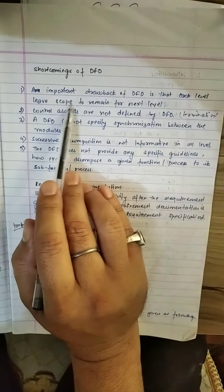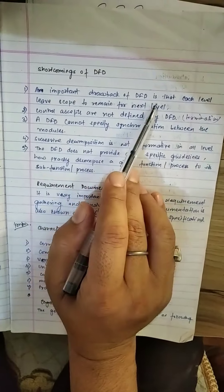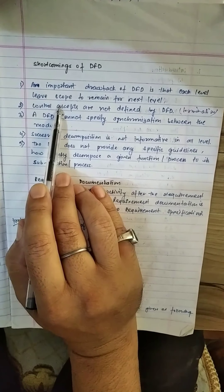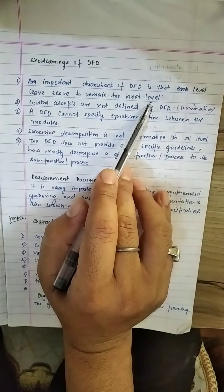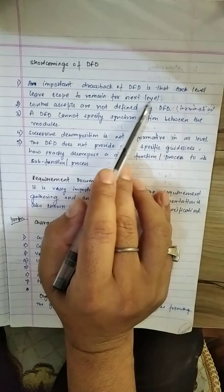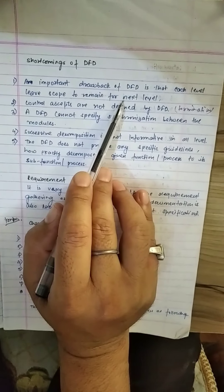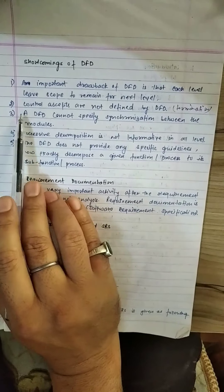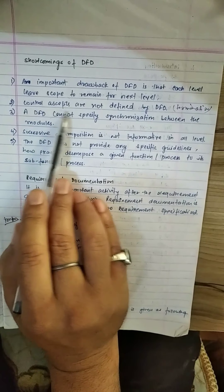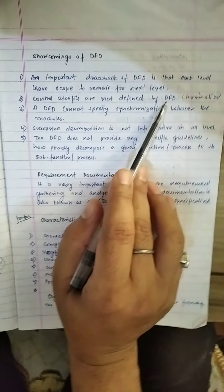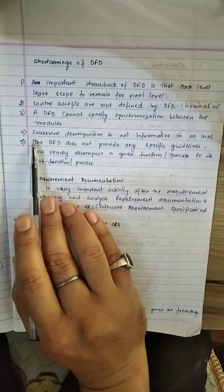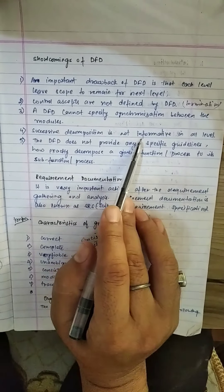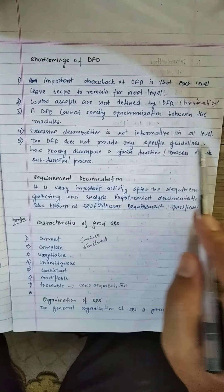Shortcomings of DFD: An important drawback is that each level leaves scope to remain for the next level, meaning no level is truly optimal. Second, control aspects are not defined by DFD. Third, a DFD cannot specifically handle synchronization between modules. Fourth, successive documentation is not informative at all levels.